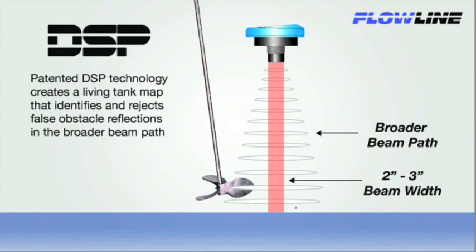DSP is able to filter out false obstacle reflections and track the true level of liquid. This gives Flowline ultrasonic sensors a 2 to 3 inch minimum beam width across the measurement range and increases the installation flexibility of the sensor.